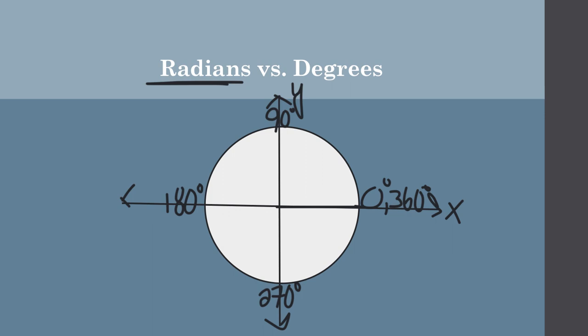Now how do we compare this to radians? A radian is very similar to the radius of a circle. The radius is the length from the center to the edge — that is R. So if I take that length and think of it as a piece of loose string and wrap it around the circle, it goes to about right there for one radius.